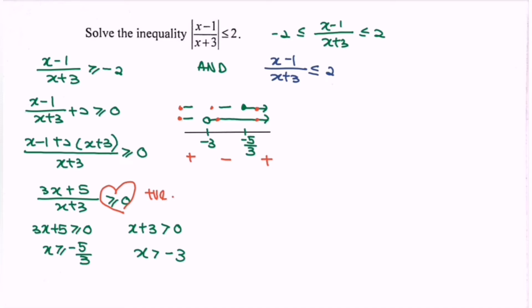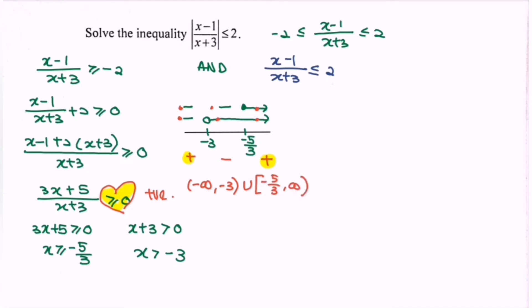We refer to the positive side and express the answer in interval form: negative infinity until negative 3, where negative 3 is not included, union negative 5 over 3 until infinity. That is the answer for the left hand side.